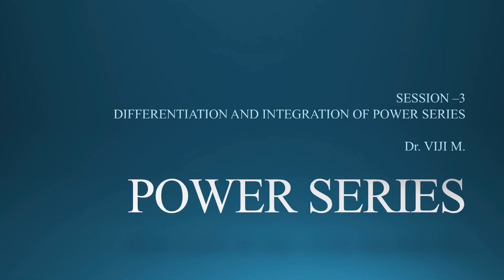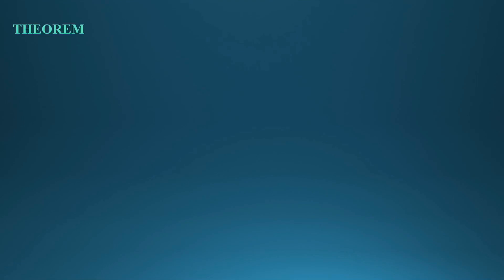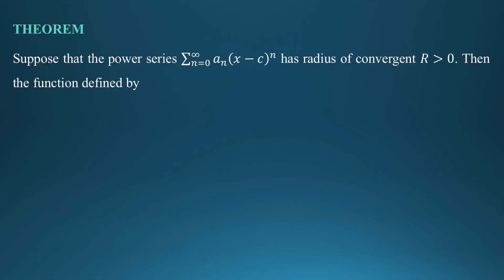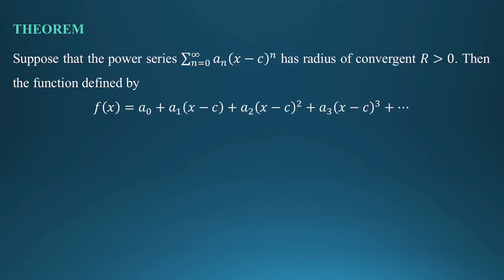The theorem says that: suppose the power series summation n equal to 0 to infinity, a_n times (x minus c) to the power n, has radius of convergence r greater than 0. Then the function defined by f of x equals a_0 plus a_1(x minus c) plus a_2(x minus c)² plus a_3(x minus c)³ plus etc.